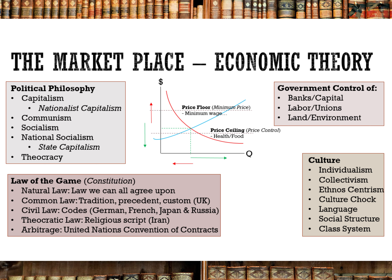Where common law might say smoking crack cocaine is illegal, civil law might say smoking substances that are controlling or altering your mindset are illegal. Theocratic law is when you follow religious scripts very closely — Iran is a good example today. Sometimes we can't agree upon things, and that's why we have arbitrage laws, which are typically voluntary ways of solving disputes. The United Nations has a convention on how arbitrage rules should be handled and how contracts should work across borders, so a company might specify in their contracts that disputes will be resolved in, for example, Stockholm, Sweden.